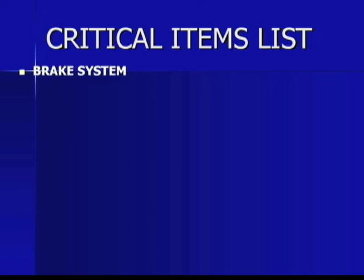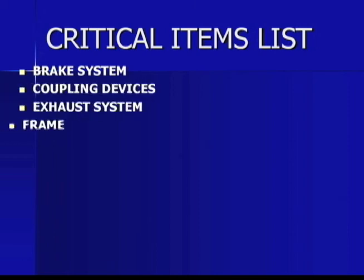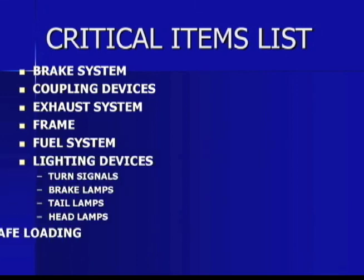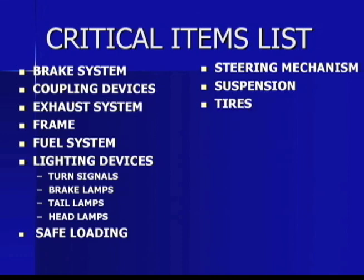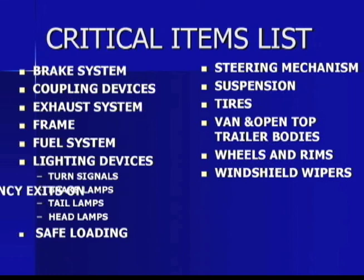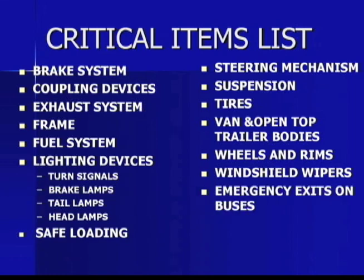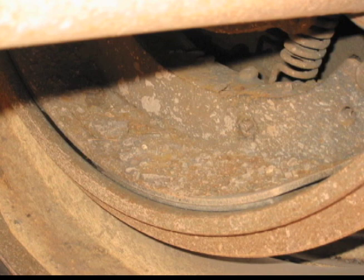Critical items on inspections include: brake systems, coupling devices, exhaust system, frame, fuel system, lighting, safe loading, steering mechanisms, suspension, tires, van and open-top driver bodies, wheels and rims, windshield wipers, and emergency exits on buses. Any violation on these items could possibly put you out of service. Minimum lining thickness on brakes is a quarter of an inch. One example showed a shoe with virtually no pad left — it's measured at the center of the shoe.